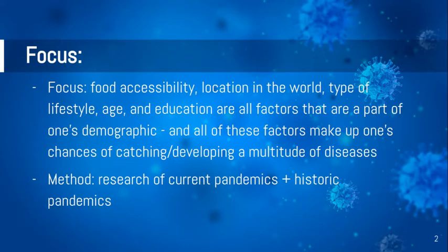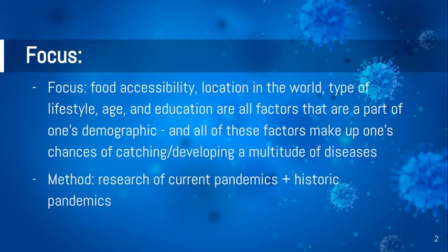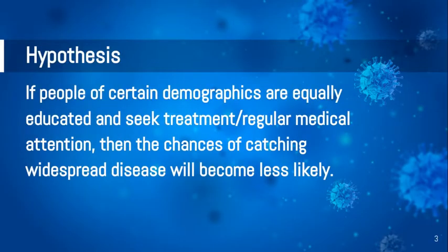My focus for this project, which I started in October to November and worked on all the way to February, was looking at social determinants of health and how they intersect and affect how long someone lives or how susceptible they are to catching a disease. My method was researching current pandemics, historic pandemics, and vulnerable populations. My hypothesis was: if people of certain demographics are equally educated and seek treatment or regular medical attention, then the chances of them catching widespread disease will become less likely.